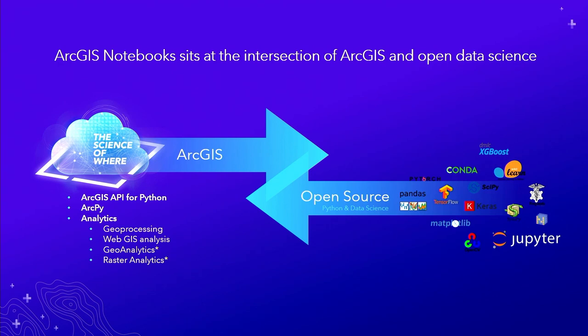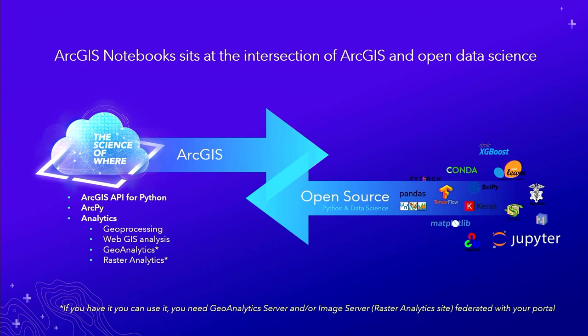If you're wondering why there are asterisks next to GeoAnalytics and Raster Analytics, that's to say you need those servers federated with your enterprise deployment if you want those tools to appear so you can use them. The notebook experience sits right there at that intersection.